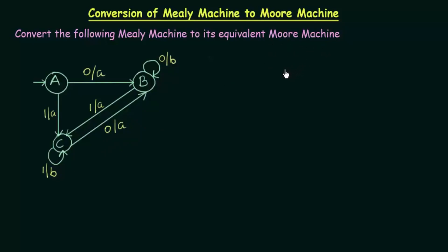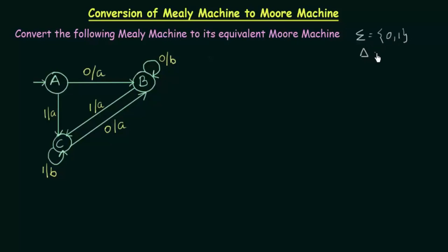Listen to this lecture carefully because this is a little different from the conversion of Moore to Mealy. Before we start, let's see what are our inputs and outputs in this example. Our inputs are zeros and ones and our outputs are A and B.